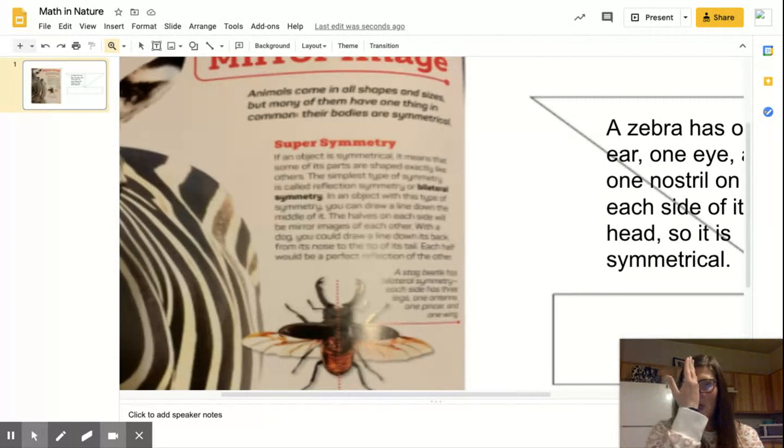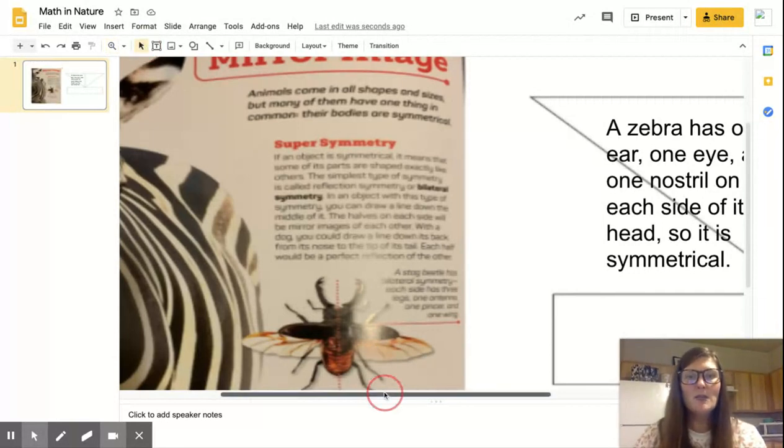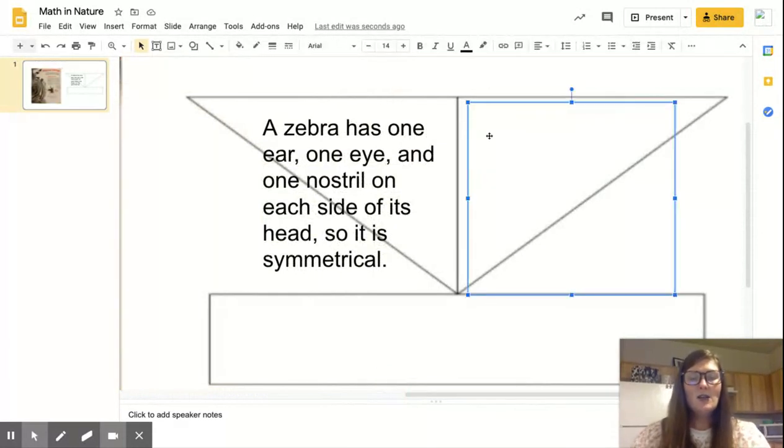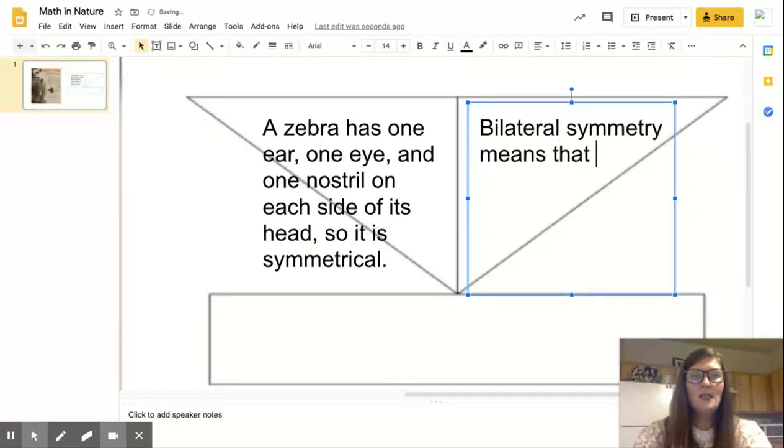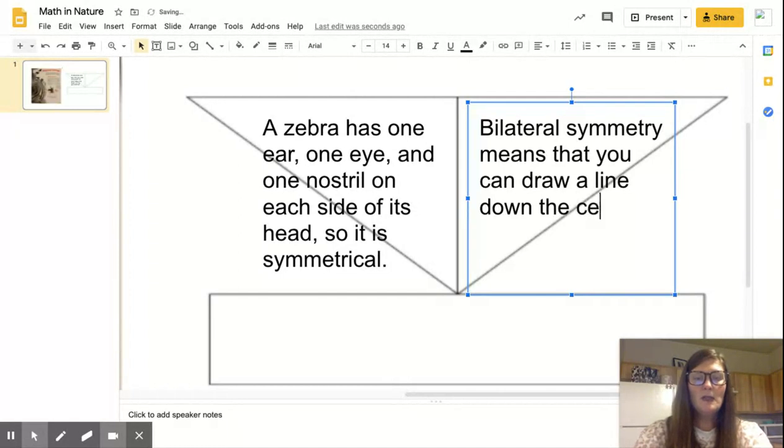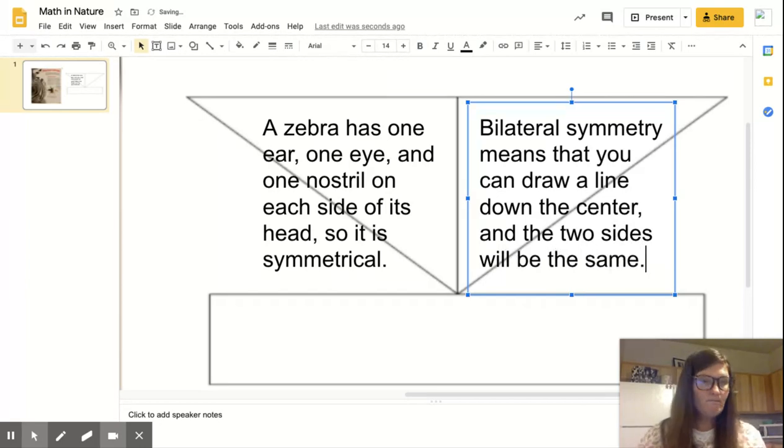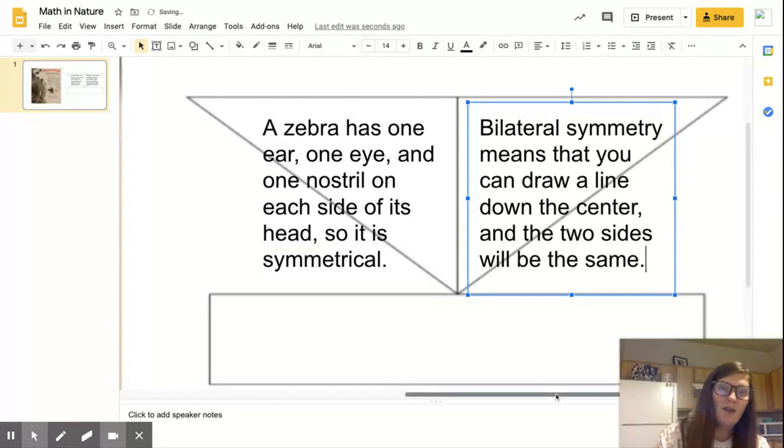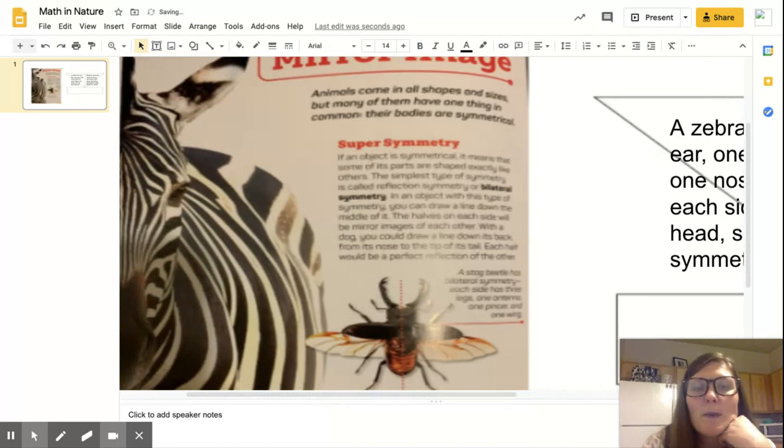When I think about that zebra and I think he's got one eye, one ear, one nostril on either side of its head, then he's got bilateral symmetry, right? So I'm going to go back over here. I'm going to write that I learned bilateral symmetry means that you can draw a line down the center and the two sides will be... I might have some more information. So I'm going to go back over here to the text. This is a great way to take notes. I'm going to read a little more.